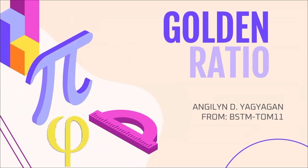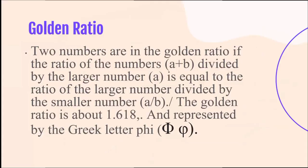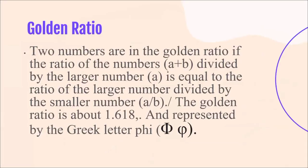So what is the Golden Ratio? This is another concept related to the Fibonacci sequence. The Golden Ratio involves two numbers. They are in Golden Ratio if the ratio of A plus B divided by the larger number A is equal to the ratio of the larger number A divided by the smaller number B.